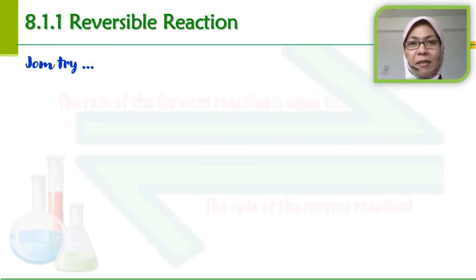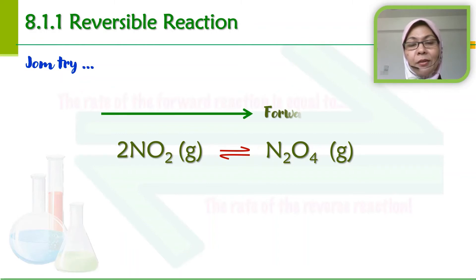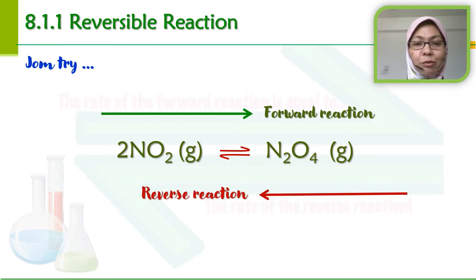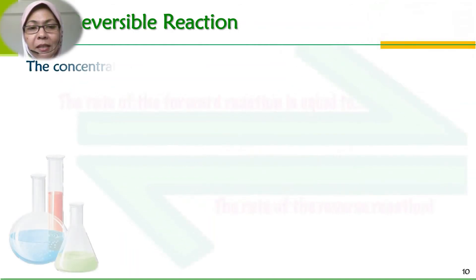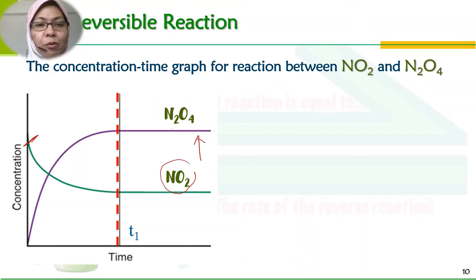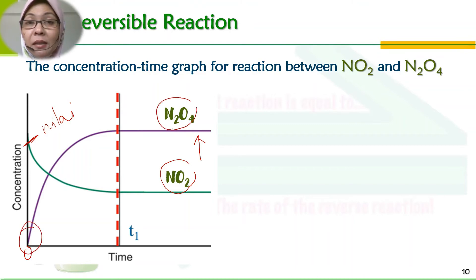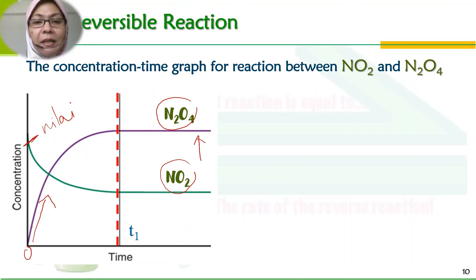Mari kita cuba discuss graph concentration versus time untuk tindak balas NO2 menjadi N2O4. Daripada NO2 menjadi N2O4 adalah forward reaction, dan daripada N2O4 menjadi NO2 adalah reverse reaction. Kalau kita lukiskan graph concentration versus time sekiranya tindak balas dimulakan dengan NO2 — NO2 ada satu nilai kepekatan. Pada masa kosong ini, N2O4 kepekatan dia kosong, belum terbentuk. Tetapi sebaik saja dia mula terbentuk, kepekatan N2O4 semakin meningkat dan kepekatan NO2 semakin berkurang.